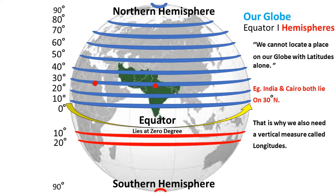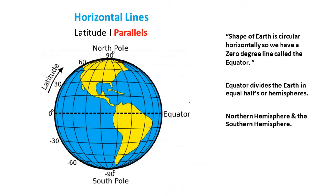That is why we also need a vertical measure called longitude. To revise: we call latitudes 'parallels of latitude' because they are parallel to each other. The equator divides the earth into equal halves — the northern hemisphere and the southern hemisphere. There are 90 latitudes in each hemisphere, and each degree has its own latitude.